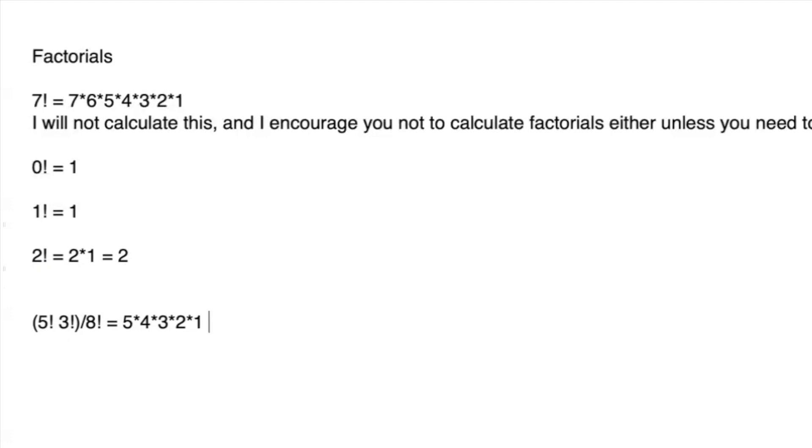So 5 factorial, 5 times 4 times 3 times 2 times 1. 3 factorial is 3 times 2 times 1. And then 8 factorial is 8 times 7 times 6 times 5 times 4 times 3 times 2 times 1.